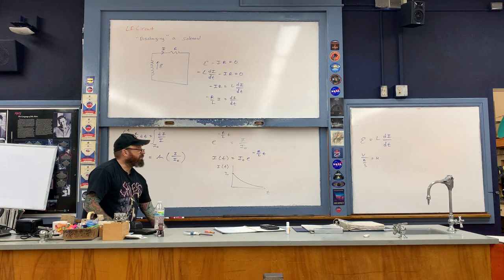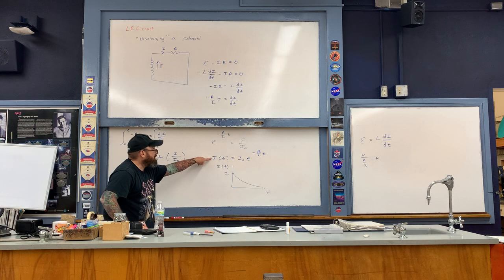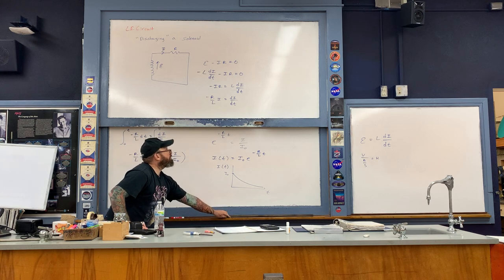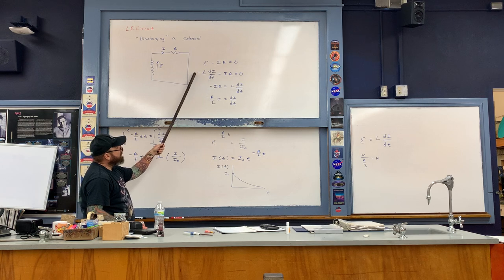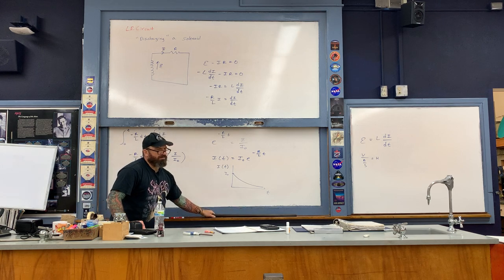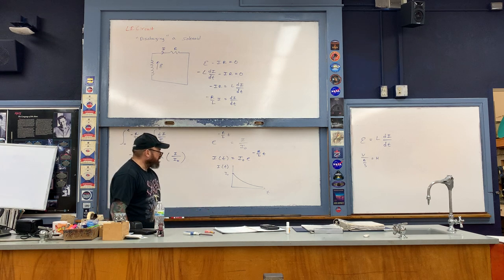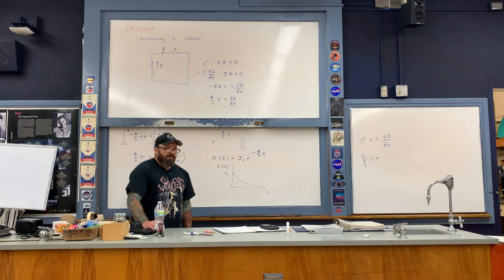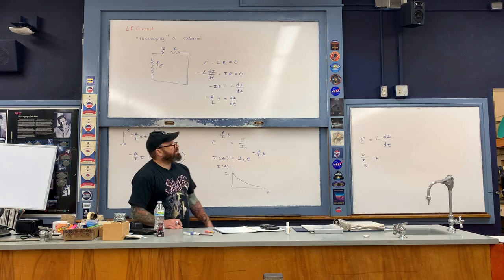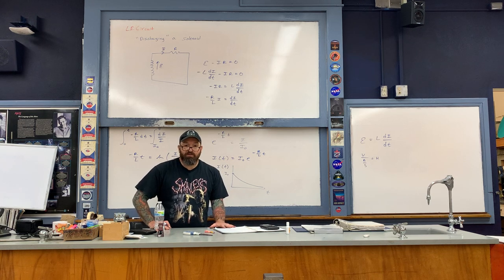If we needed to calculate the counter-EMF as a function of time, we would take di/dt, being sure to include the negative sign as we did originally. However, this is probably not going to appear on the AP exam — they are generally concerned with finding the current as a function of time. That finishes the LR circuit. The remaining videos will cover the last couple of situations.